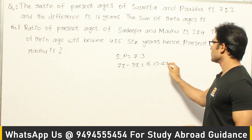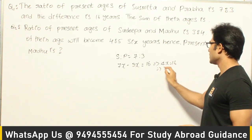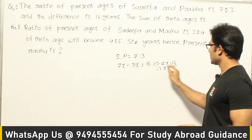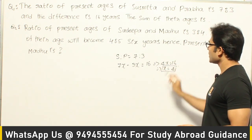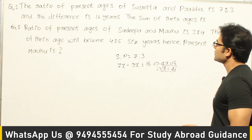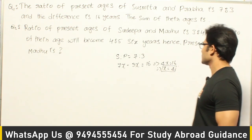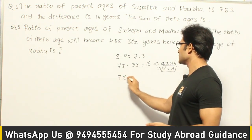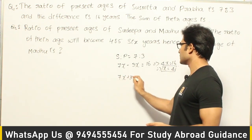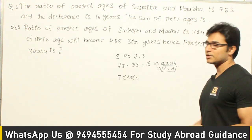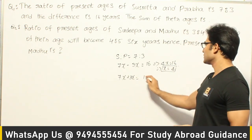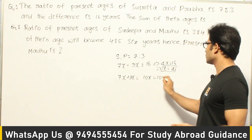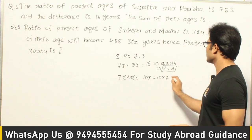That means 4x equal to 16, which gives x equal to 4. Now they are asking about the sum of their ages. Sum of their ages is 7x plus 3x, which is 10x. That means 10 into 4 is 40. So the answer for the first one is 40.